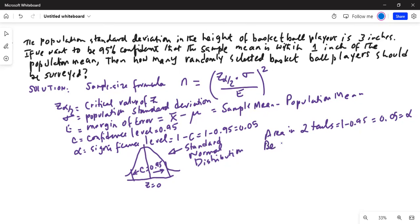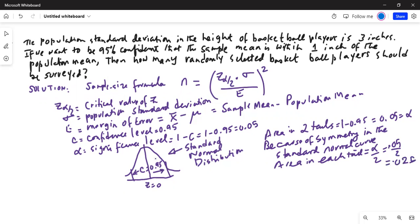Because of symmetry in the standard normal curve, the area in each tail is equal to alpha by 2, or 0.05 divided by 2, which is equal to 0.025.